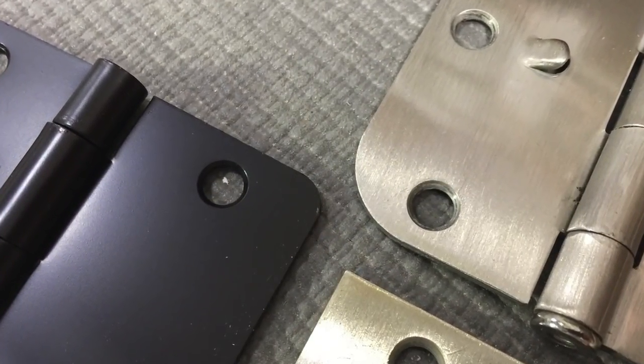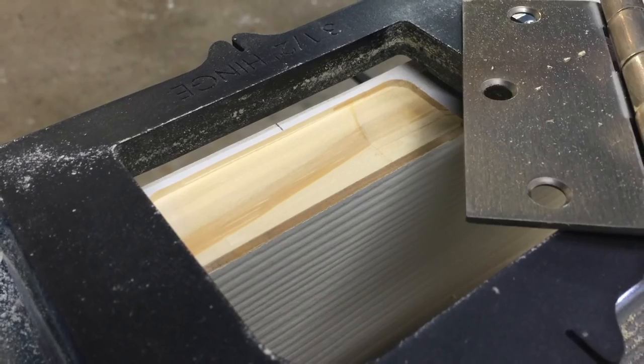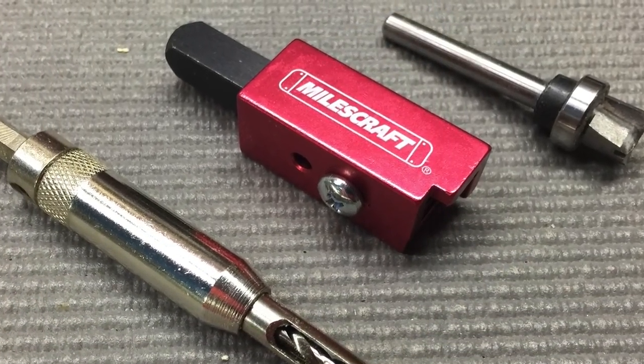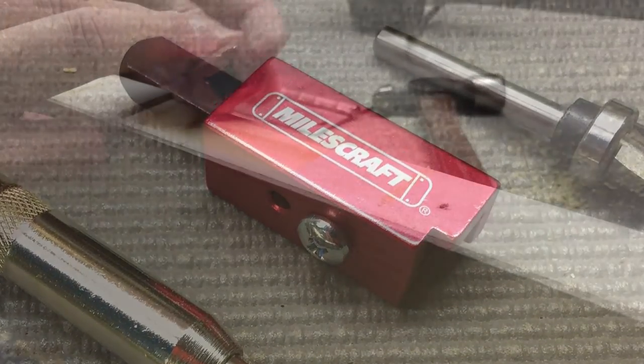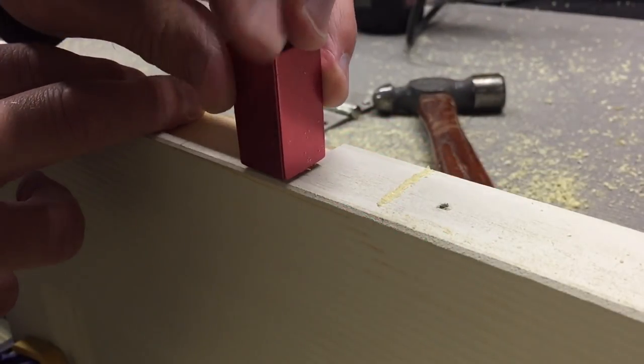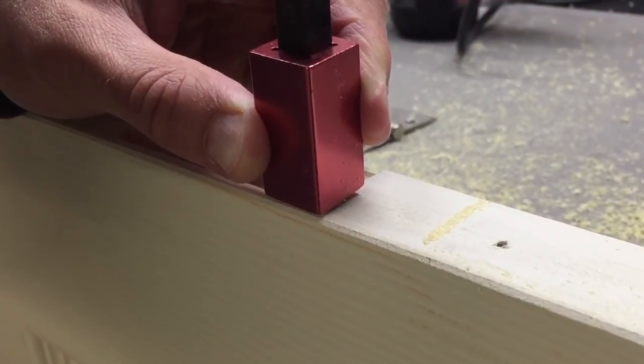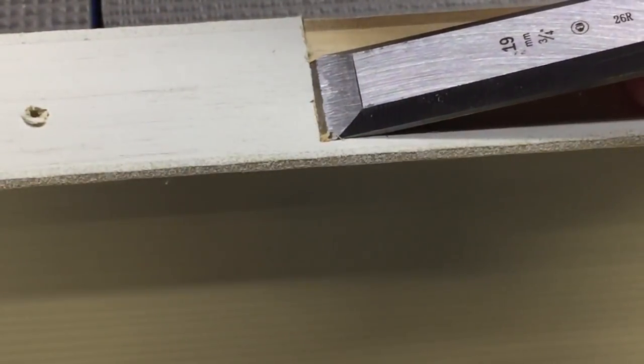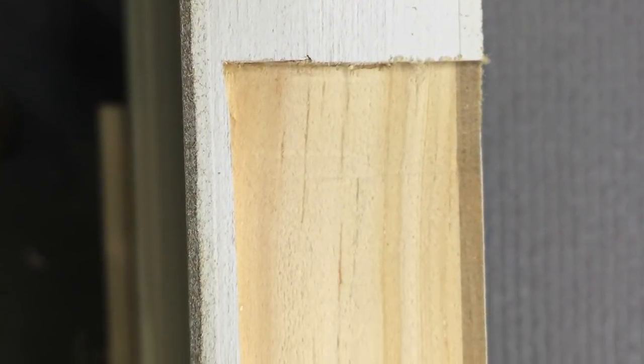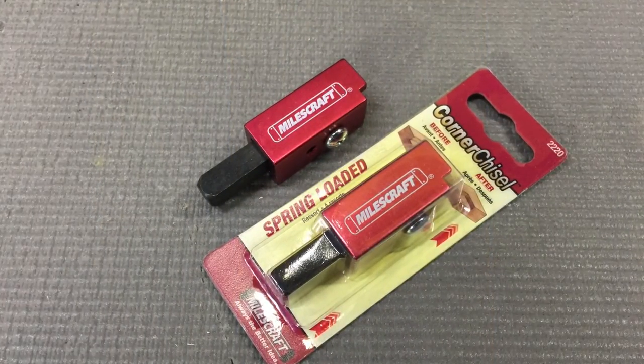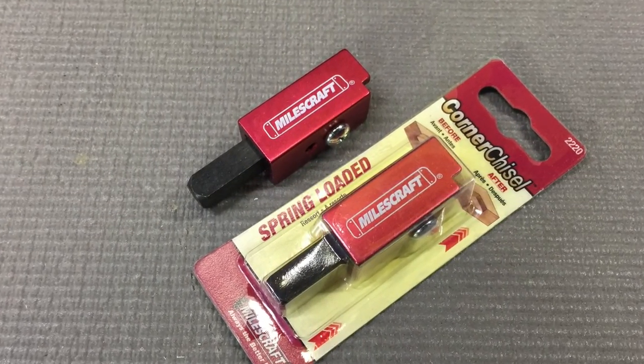If you require square hinges for your project, you will first need to rotate the template in its frame. This will allow you to remove more material from the corners. The HingeMate 350 kit comes with a corner chisel that will score the corner of the mortise. Simply line the chisel up with the corner and strike it with a hammer and then using a chisel, you can clear out that material. This corner chisel can be purchased separately as well if needed and can be found on the Miles Craft website.